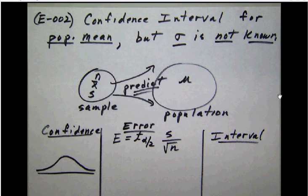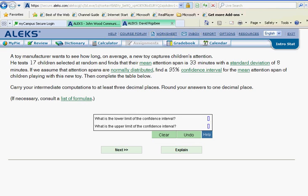So let's go back and read the problem carefully because on assessments they don't tell you which is which and you have to make this fine line distinction. Now it says a toy manufacturer wants to see how long on average a new toy captures children's attention. So he tests 17 children at random. Right away we can see that that is our sample size.